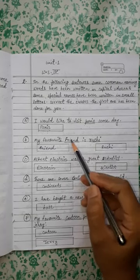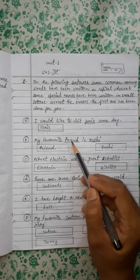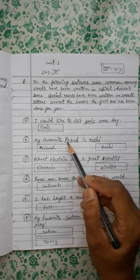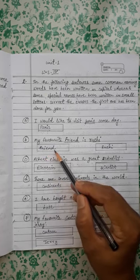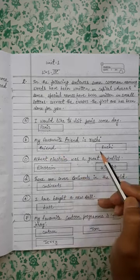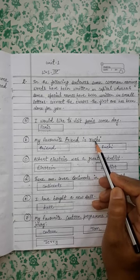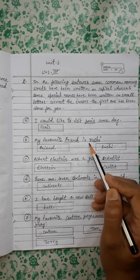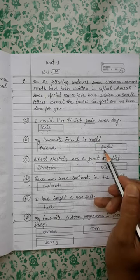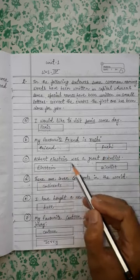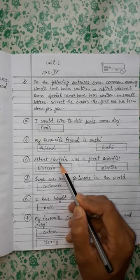Next: 'My favorite friend is Ruchi.' Here we have two nouns — friend and Ruchi. Friend is a common noun; it could be anyone who is a friend. So for friend, a common noun, we have to write a small 'f' — f, r, i, e, n, d. In the next box, we have to correct Ruchi: since it is a special name, the starting letter R will be capital.